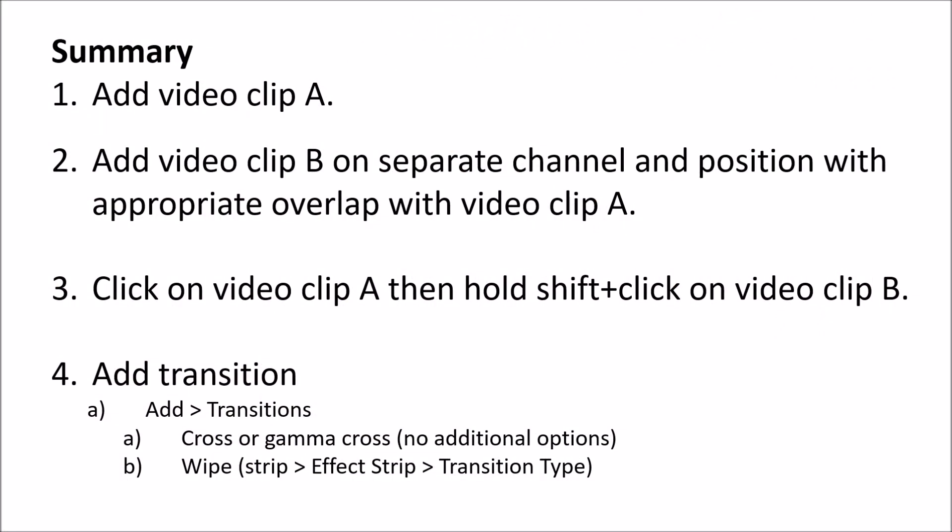To summarize: adding video transitions in Blender is surprisingly easy. First, add video clip A and video clip B on separate channels with an appropriate amount of overlap. The only tricky part is selecting clips in the proper order — click clip A first, then hold Shift and click clip B. Then go to Add > Transitions and pick the type you want. Cross and Gamma Cross have no additional options to tweak, but if you pick Wipe you can go to Strip > Effect Strip to choose the transition type. I hope you enjoyed the video — please consider subscribing as I plan many more Blender video editing tutorials. Until next time, bye!